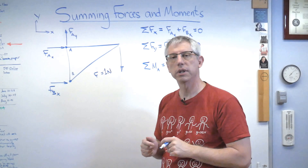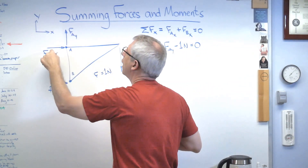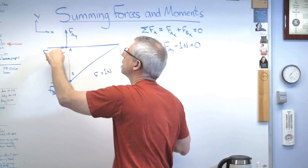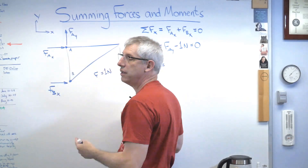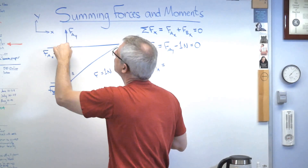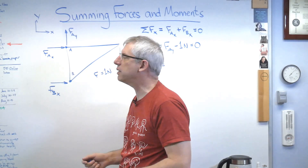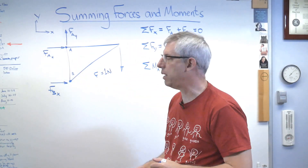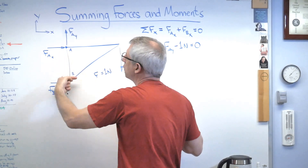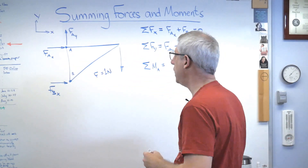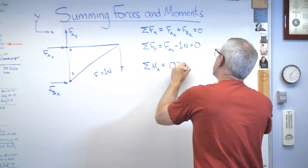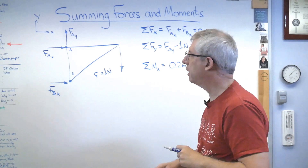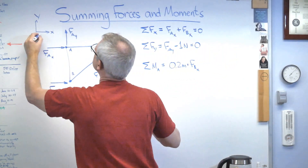Remember what a moment is: it's a torque, a force times a distance. FAx acts right through point A so its moment arm is zero — moment due to FAx is zero. FAy also acts through that point — moment due to FAy is zero. I don't need them anymore. FBx, however, acts at a distance of 0.2 meters from A, so the moment due to FBx is 0.2 meters times FBx.